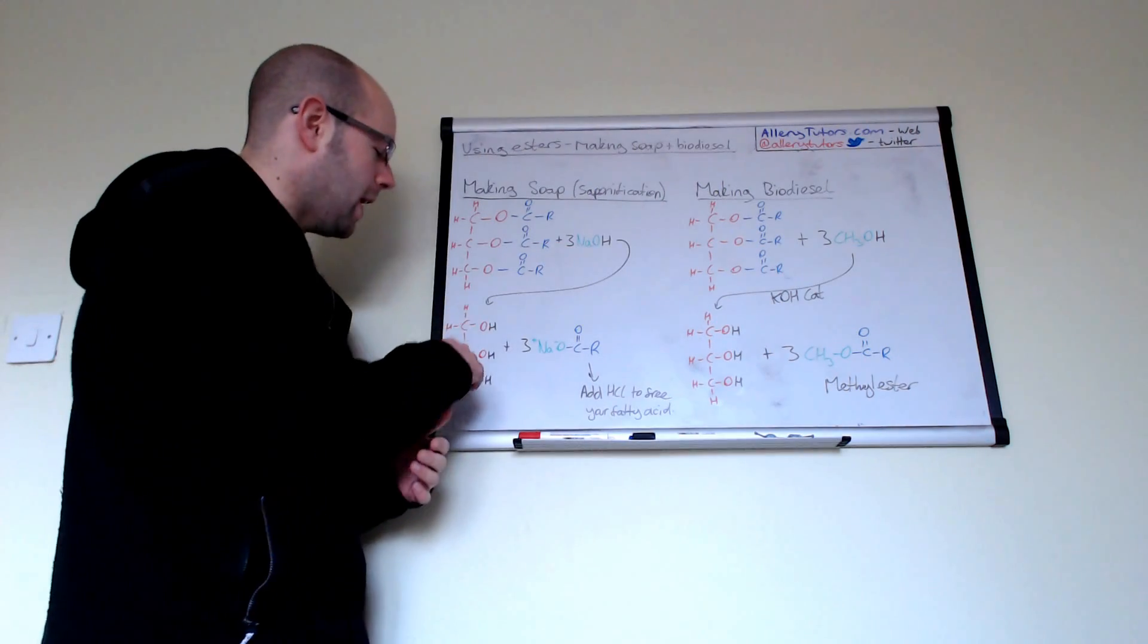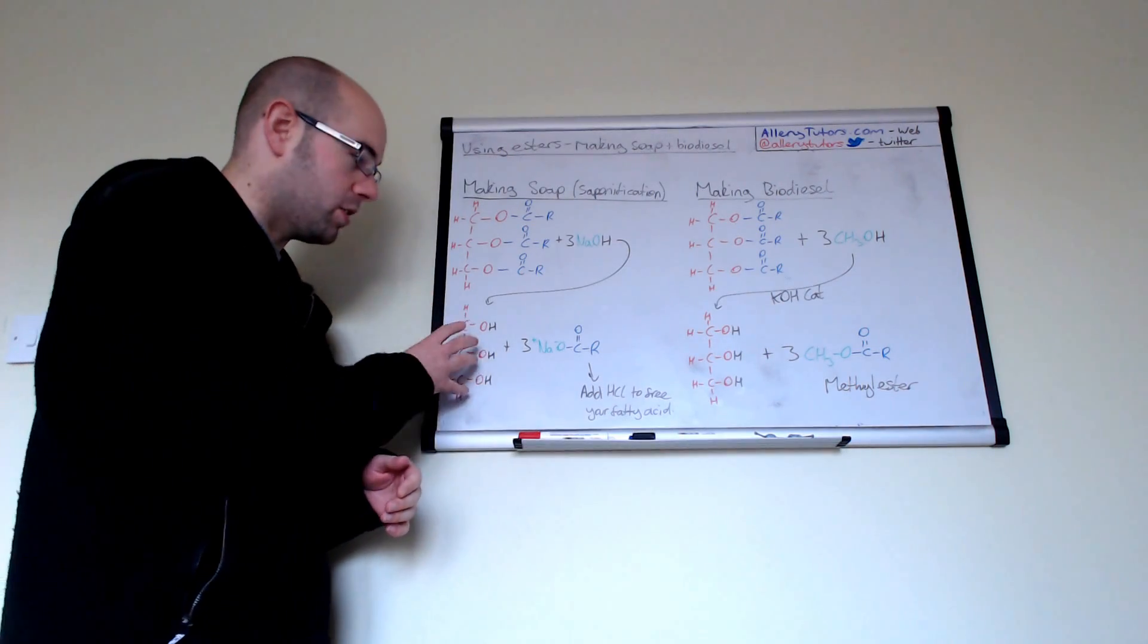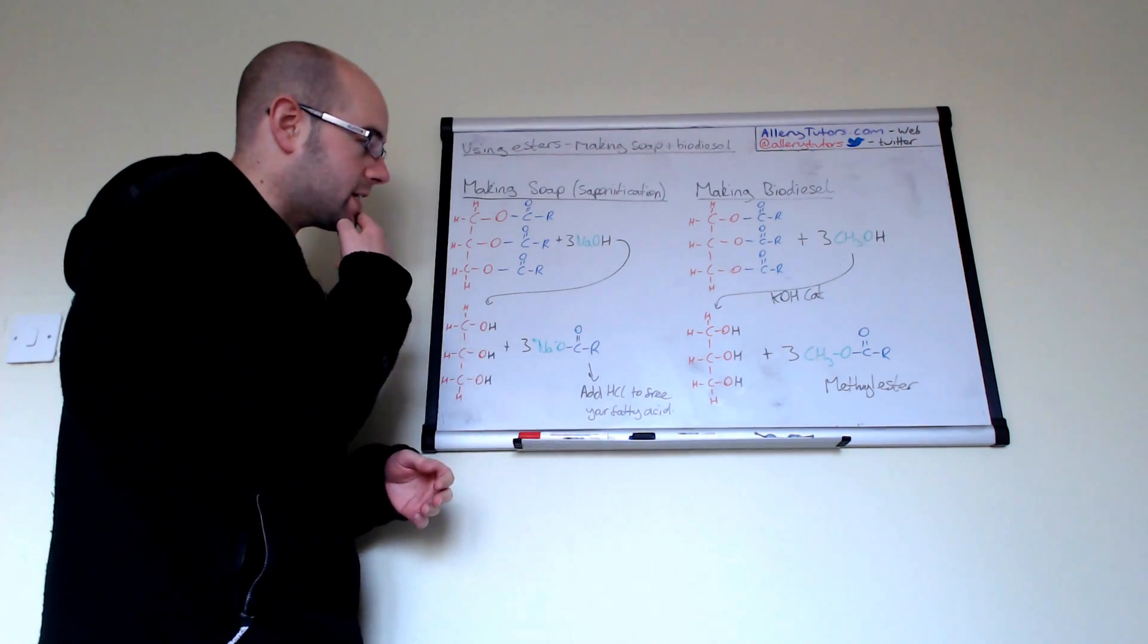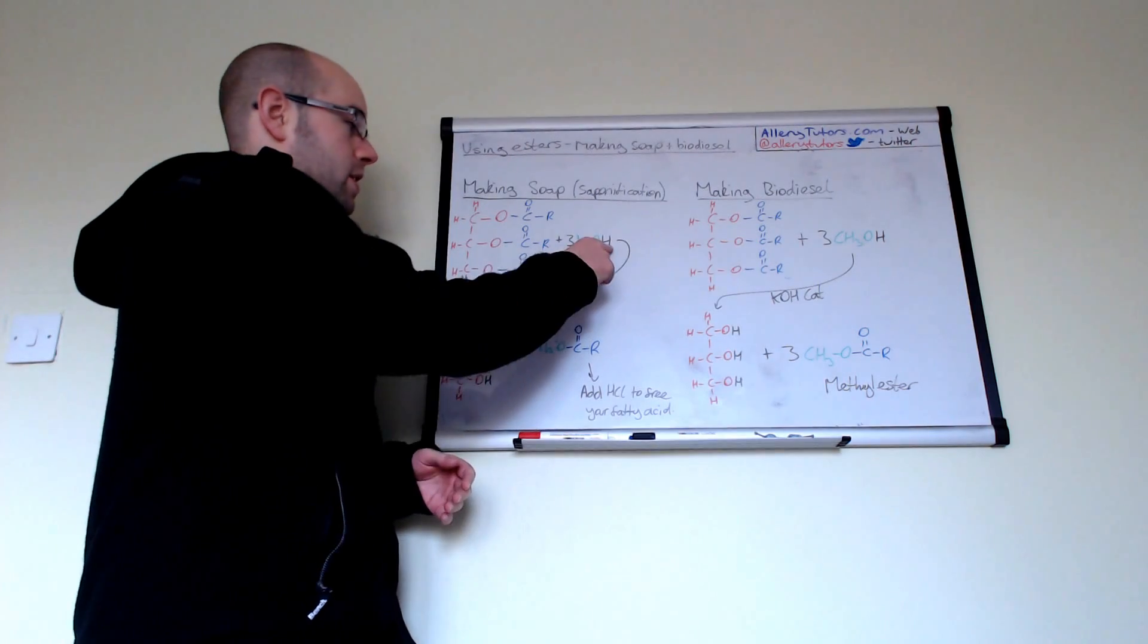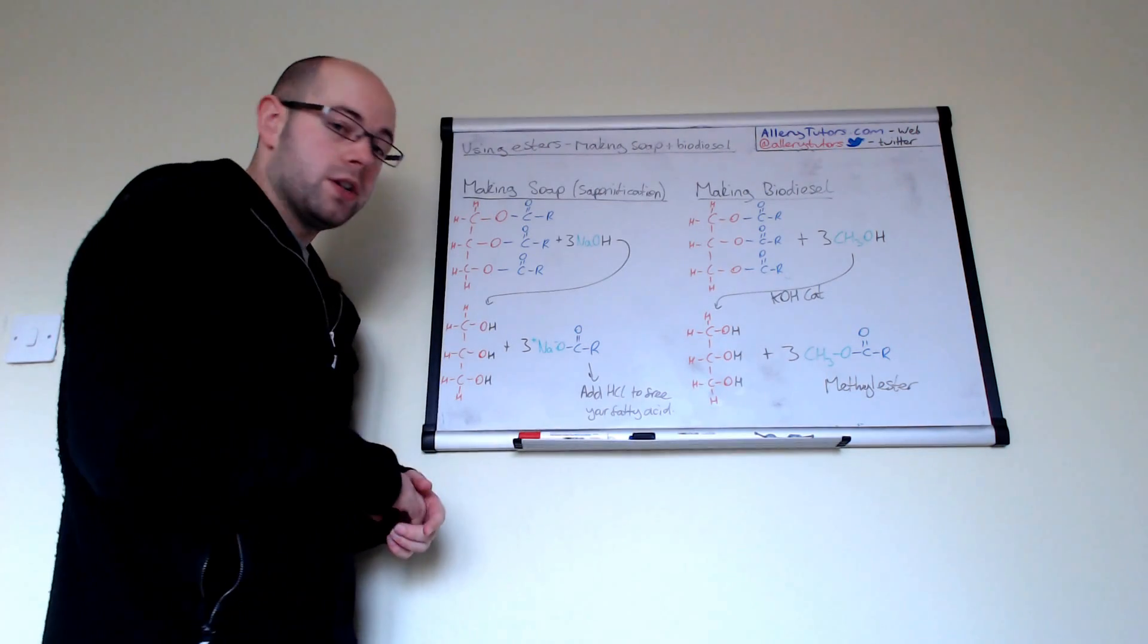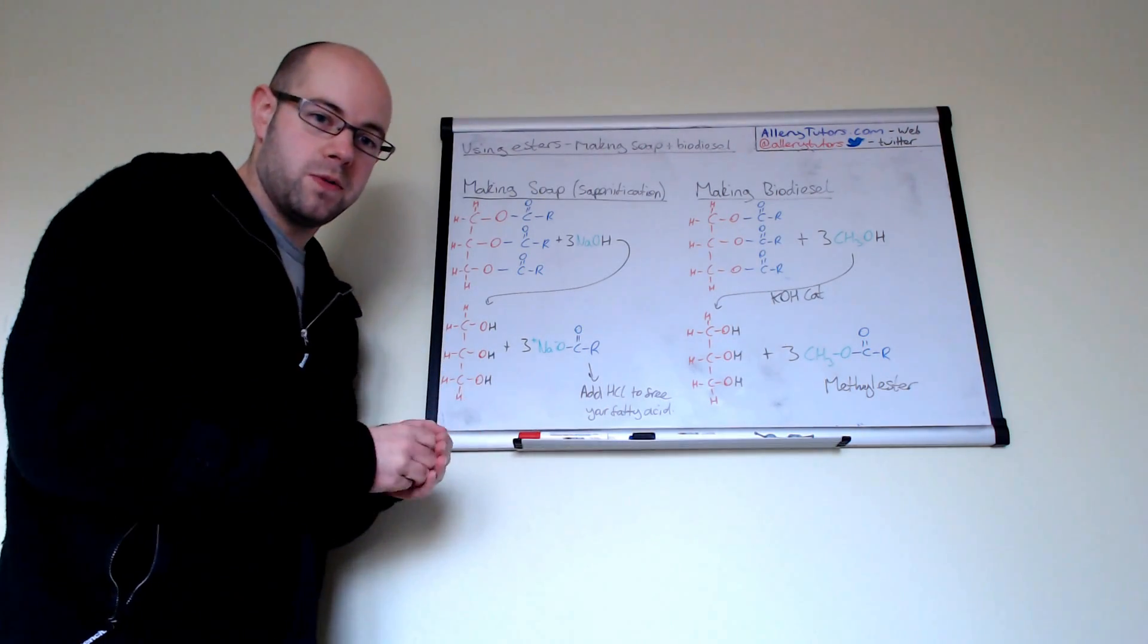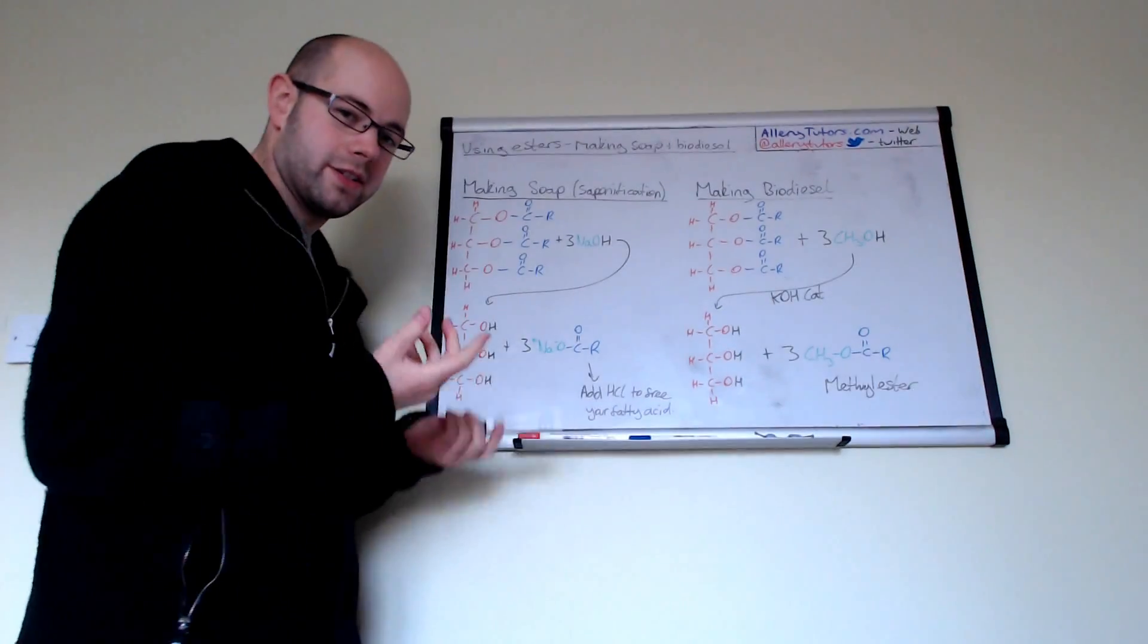What happens is you make glycerol, which can be used in the food industry on its own. This is the soap here, and you can see where it's come from because I've color-coded it. The glycerol comes from the red bit and the black hydrogen from sodium hydroxide, and everything else forms your salt - which is actually your soap. You'll notice it has two different parts. Soap is designed to clean things, to remove dirt, oil, and grease. By looking at the molecule's structure, you can see how the soap works.